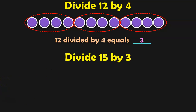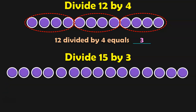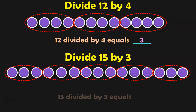Let us find out what is 15 divided by 3. I have 15 objects and I am going to divide it by 3. So draw a circle around each group of 3 objects — first 3, next 3, next 3. Draw a circle around the next 3 objects and still you have 3 more objects, so draw a circle around the next 3 objects. So how many groups are you getting here? 5 groups. So 15 divided by 3 equals 5.